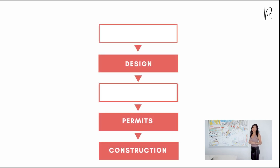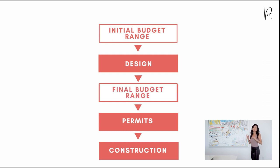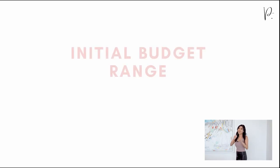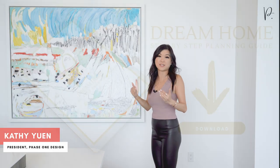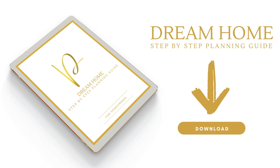Let's start with a graphic of the planning process. You'll notice that there are two different steps that talk about budget. First, you have an initial budget range that should be confirmed before you start your project. Then, a final budget range that can be confirmed once you have a design and a set of plans ready. In this video, we're going to be focusing on the initial budget range. We've created a step-by-step planning guide for custom homes — it's a free download linked in the description below.